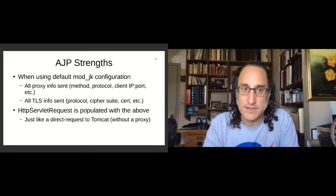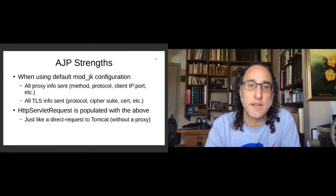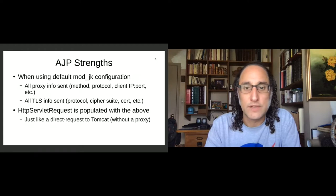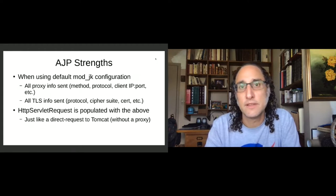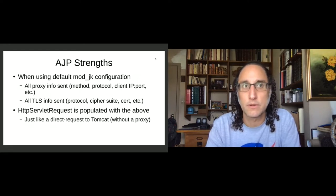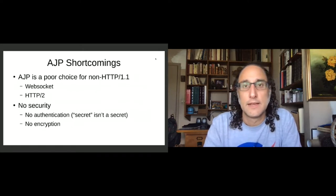AJP actually has some very nice things. When you're using the default mod_jk configuration, you get a lot of stuff out of the box without having to add additional configuration. mod_jk's default configuration includes things that most people need — for example, when you want to get the remote host or the remote client IP, it's not giving you information about the reverse proxy, it's giving you information about the actual client.